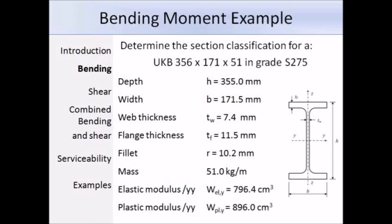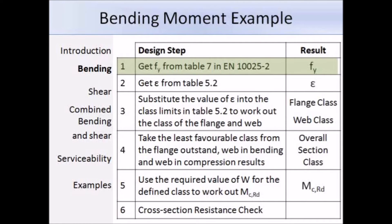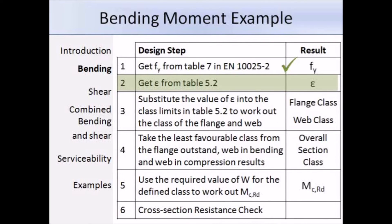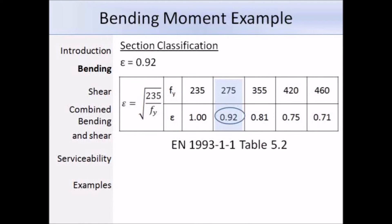The first step is to determine the yield strength of the section. The UK National Annex will tell us to refer to the product standards. Here is table 7 from EN 10025-2, and we can see that the largest thickness, which is the flange thickness TF, is 11.5mm. In table 7 there are several thickness limits, but for this example it's clear that 11.5 is less than 16. We know the steel grade is S275, so if we read across the table we can get a value of Fy as 275 N per mm². That's the first step done, and next we need to determine epsilon from table 5.2. At the very bottom of table 5.2 we have these values for epsilon, and we've just determined that the yield strength Fy is 275. Reading down we can see that the corresponding value of epsilon is 0.92 for a yield strength of 275 N per mm².